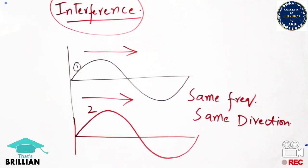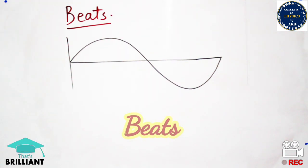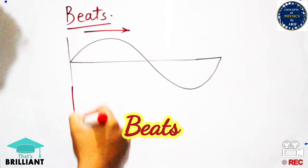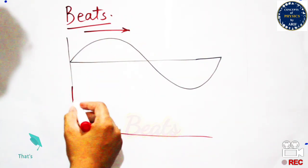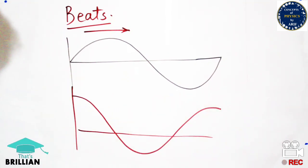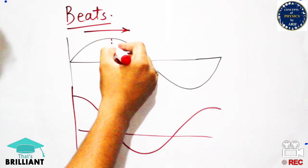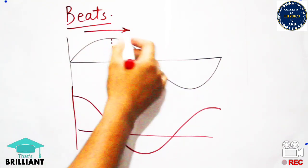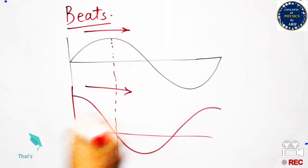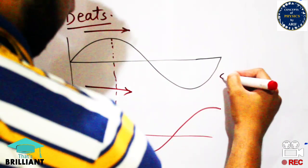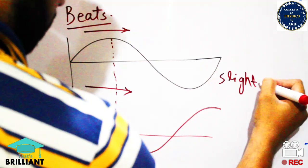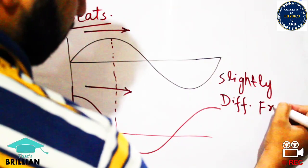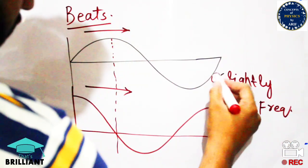Another definition related to waves is beats. Beats is a superposition of waves in which one wave travels in a certain direction and another wave also travels in the same direction, but there is a slight difference in phase. You can understand this by seeing that a portion of the second wave is shifted toward the left side, so the peak of the second wave starts from the y-axis. This slightly different phase with equal direction is known as beats.